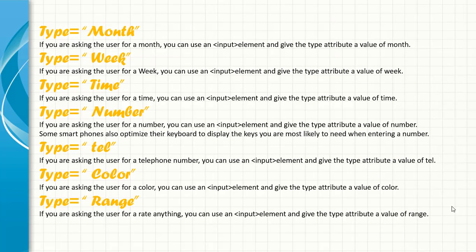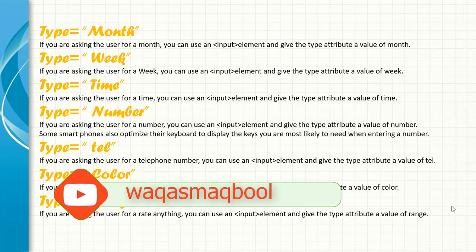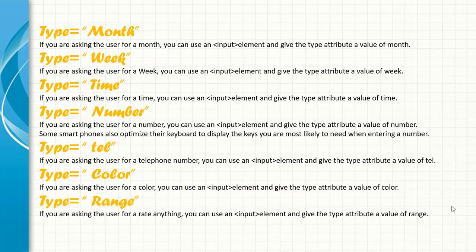Hello guys, in this tutorial I will discuss some more input types. Type is equal to month — if you are asking the user for a month, you can use an input element and give the type attribute a value of month. The second one is type is equal to week. Type is equal to time if you are asking the user for time. Type is equal to number — if you are asking the user for a number, you can use an input element and give the type attribute a value of number. Some smartphones also optimize their keyboard to display the keys you are most likely to need when entering a number.